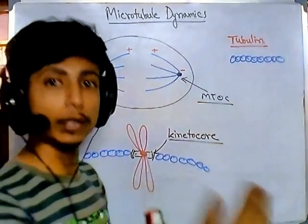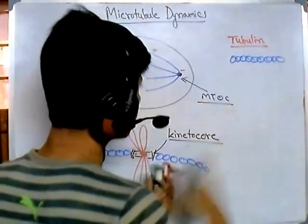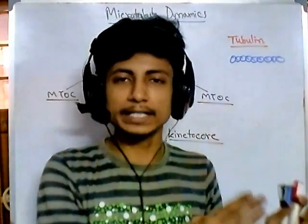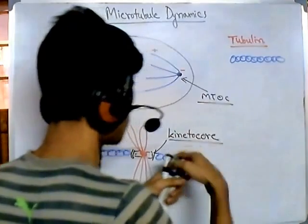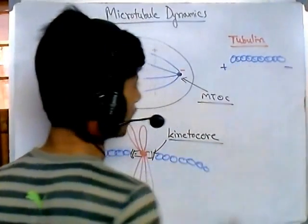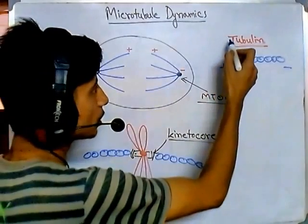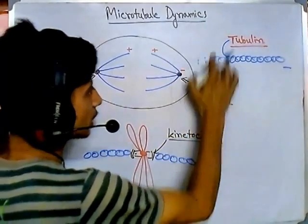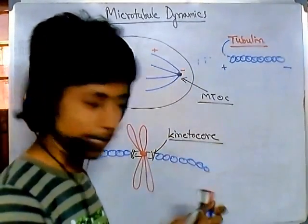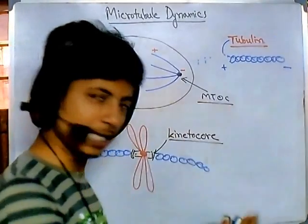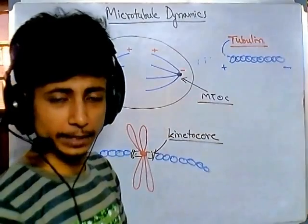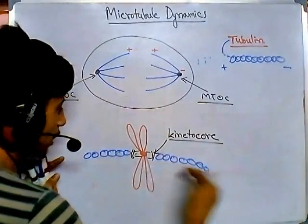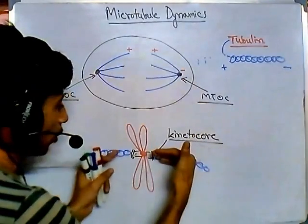The positive end of microtubules is where the microtubule is growing. Microtubules are not fixed structures — they have a kind of dynamics. New tubulin proteins come and arrange at the positive end, allowing them to grow, and they can also shrink. Both growing and shrinking can occur from the plus end, at a particular rate, maintaining a kind of balance. Microtubules coming from both ends of the cell hold the sister chromatid via the kinetochore region.